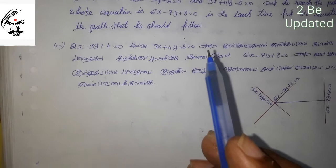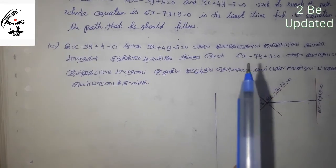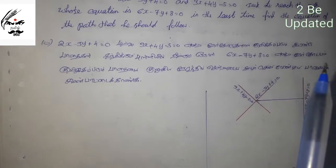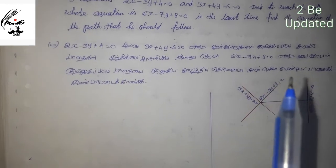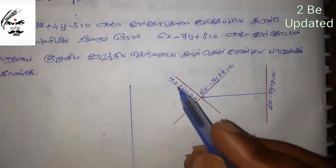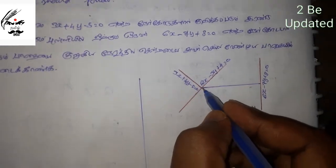The answer is 6x minus 7y plus 8 equal to 0. In this problem, we need to find the line equation. The shortest path will be the perpendicular from the intersection point to the target line.